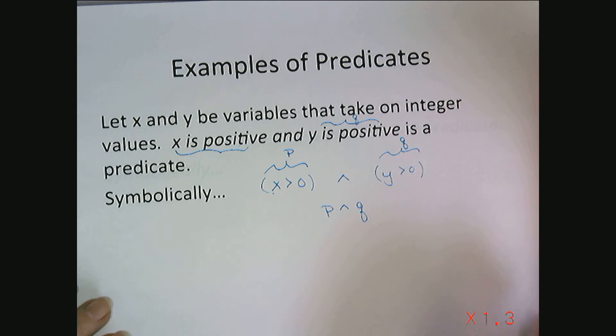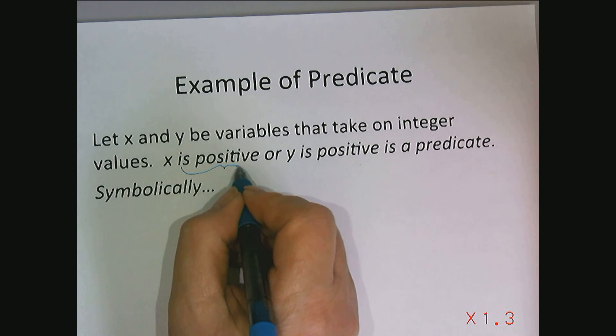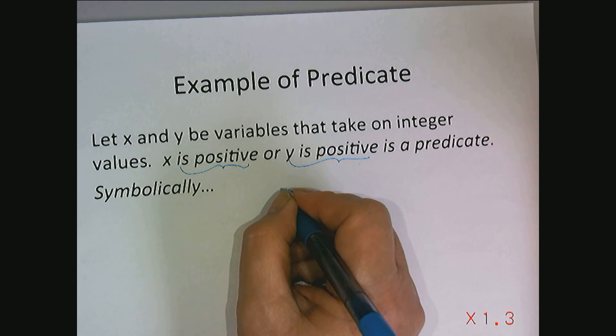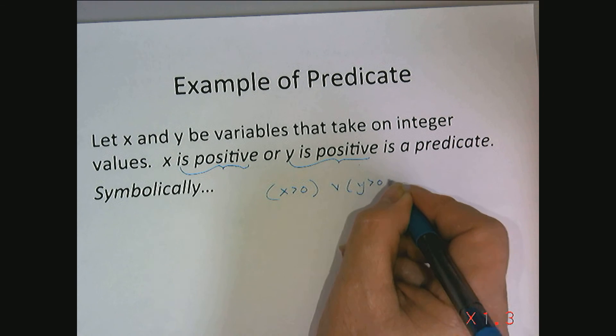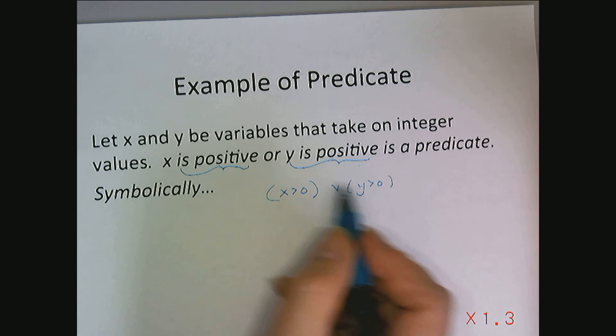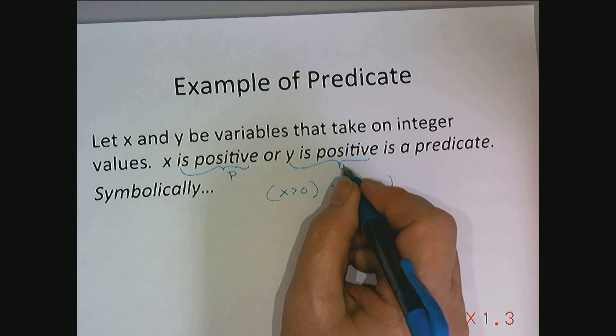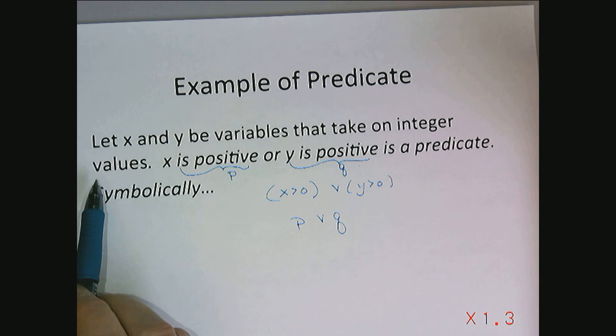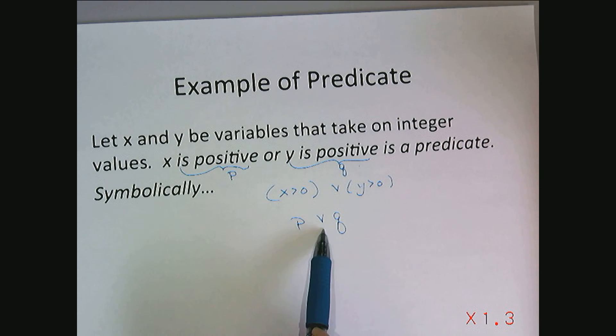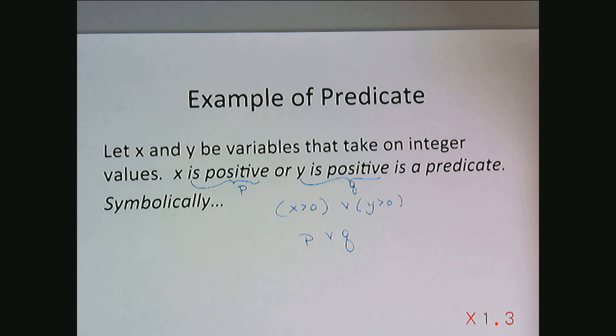Let's look at one more. x is positive or y is positive is also going to be a predicate. We can write it as x is greater than zero or y is greater than zero but if we think x is greater than zero is predicate p and y is greater than zero we could call it predicate q, we could write this as p or q. Again, writing predicates in symbolic form can be challenging but we're going to ask you to get used to it by practicing some of the problems in the next piece.